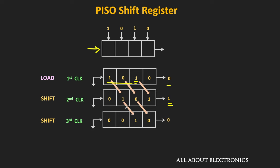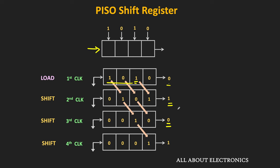After the third clock pulse, this 0 gets shifted over and is available at the output. After two shift operations, three bits are already sent out. Finally, after the fourth clock pulse, the MSB — this 1 — will be available at the output. After these four clock pulses, at the fifth clock pulse, completely new data can be loaded inside the shift register. So in this 4-bit shift register, only 3 clock pulses are required to move the data out. In general, for an n-bit shift register, it requires n-1 clock pulses to move the data out.